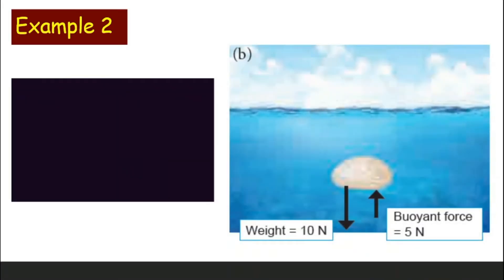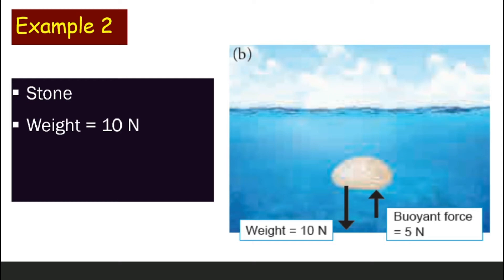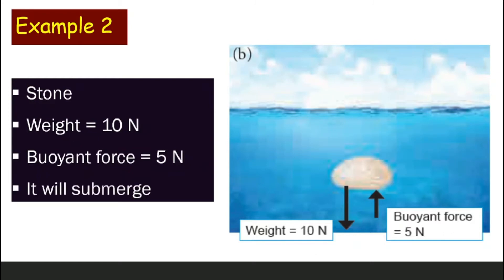How about example two — this stone? Clearly, this stone is submerged in water. The weight of the stone is about 10 N, and the buoyant force acting on it is 5 N. So, 5 N of buoyant force is not enough to support the weight of 10 N, and therefore the stone will submerge.